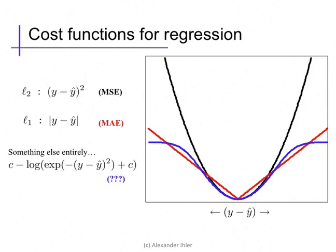If we really want to reduce large errors, we could design an alternative loss function — for example, one that looks quadratic near zero but asymptotes to some constant value at higher errors, so that no matter how large the error, the loss is bounded by some constant. Of course, optimizing these more arbitrary loss functions means we can no longer use a closed-form solution the way we did with mean squared error, but we can still optimize using something like gradient descent.